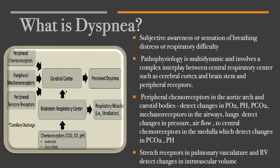Its pathophysiology is multidynamic and involves a complex interplay between the central respiratory centers — such as the cerebral cortex, brainstem, and peripheral receptors. The peripheral chemoreceptors in the aortic arch and carotid bodies detect changes in partial pressure of oxygen, pH level, and partial pressure of carbon dioxide. The mechanoreceptors in the airways and lungs detect changes in pressure, airflow, and ventilation. The central chemoreceptors in the medulla also detect changes in partial pressure of carbon dioxide and pH level.